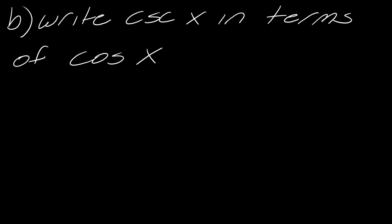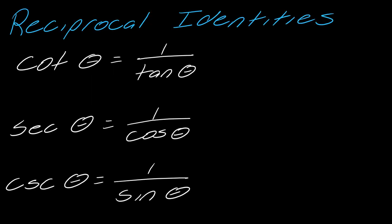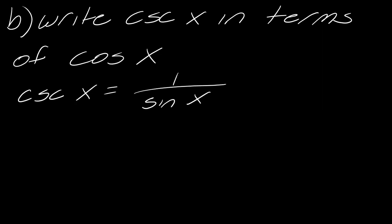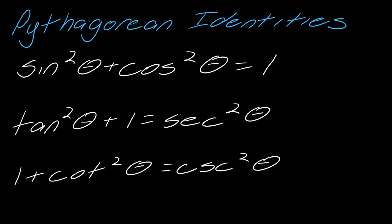So what about this other one? Write cosecant in terms of cosine of x. Cosecant has the reciprocal identity — it's equal to one over sine. So I'm going to write cosecant of x equals one over sine of x. Now we probably want to use the same Pythagorean identity again, because I need to write this in terms of cosine and I've got sine here.